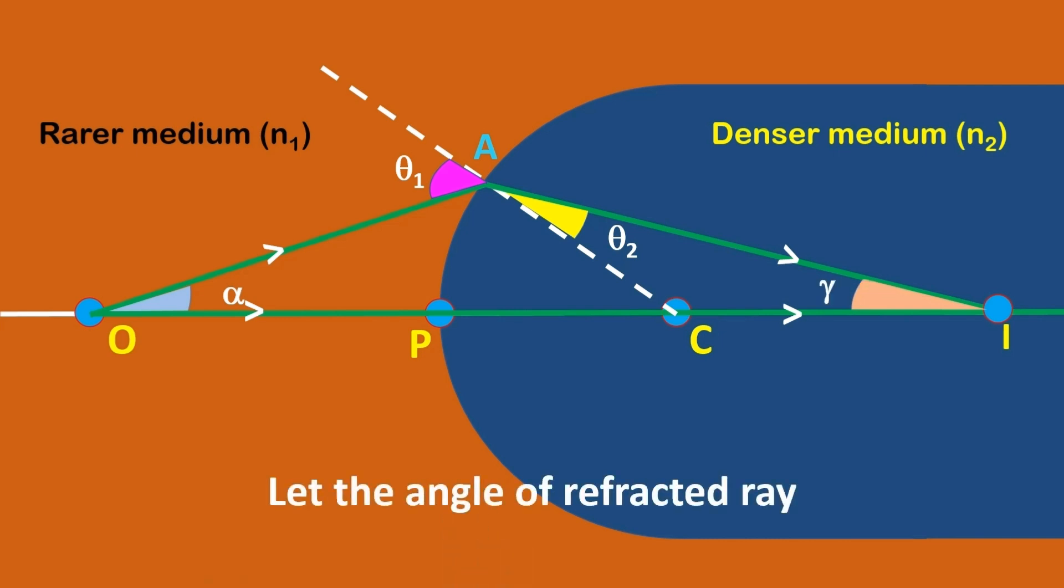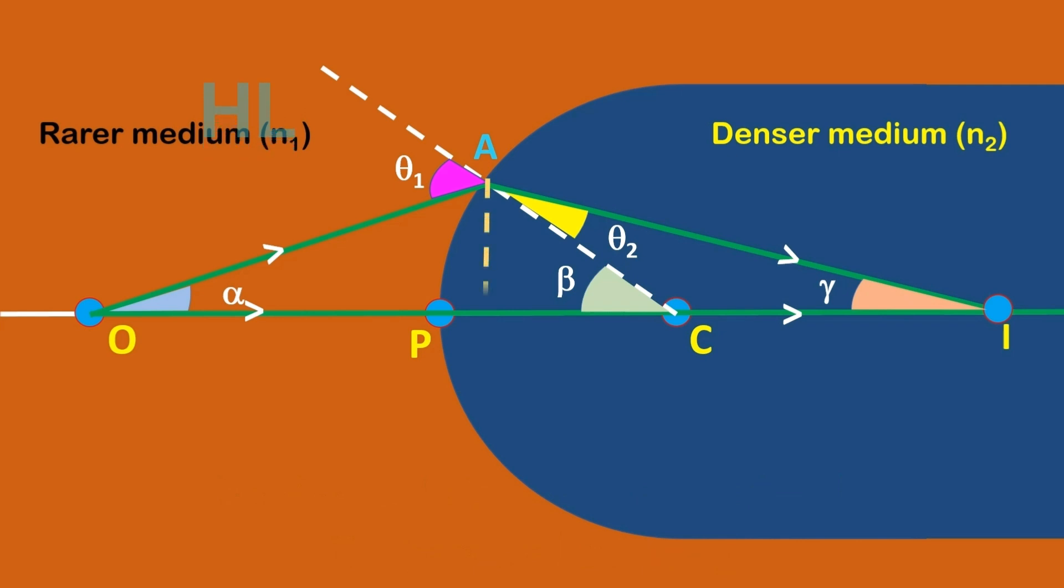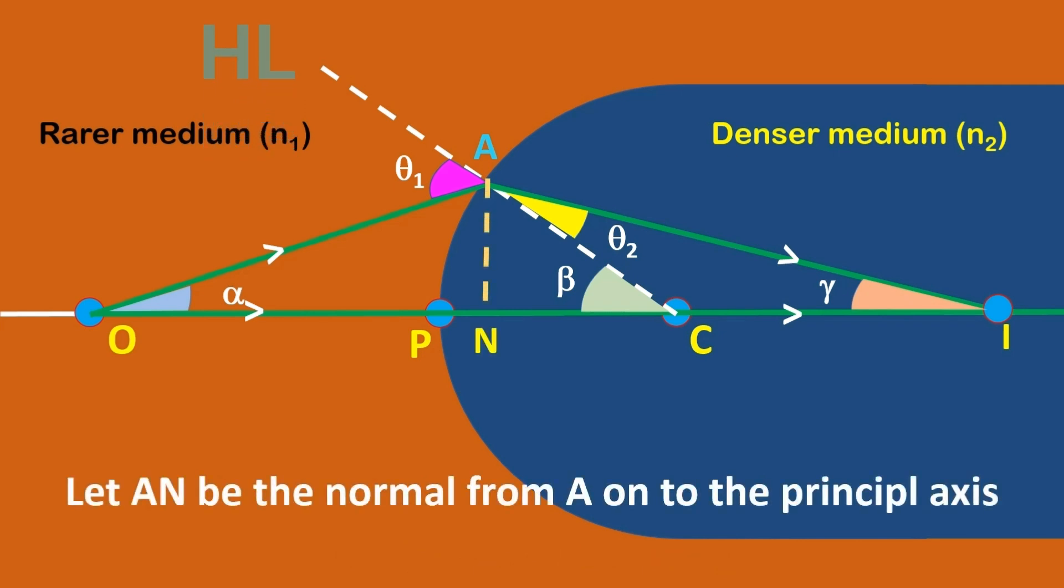Let the angle of refracted ray with the principal axis be gamma, and let the angle between normal and the principal axis be beta. Let AN be the normal from A onto the principal axis. Then N is the foot of the perpendicular.